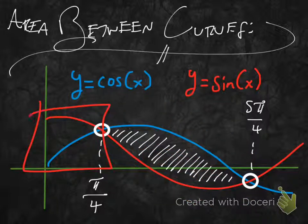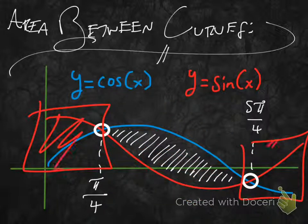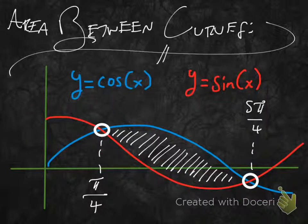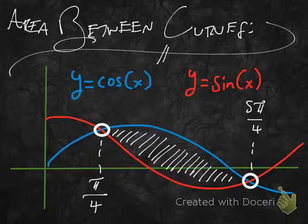They also have space between them in other regions and will have many spaces with area in between. But what I'm interested in is the area between the two intersection points at x equals π/4 and x equals 5π/4. How do we figure out how much area is in there where I've got these white tick marks?